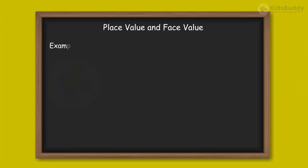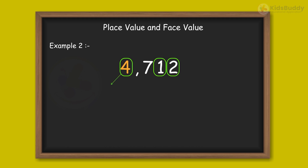Now let us solve one more example. Write the place value and the face value of the circled digits in the number given below. Look at the number 4712. The place value of the digit 4 is 4000, as it is in the thousands place, and its face value is 4 only.